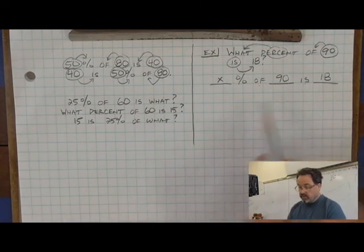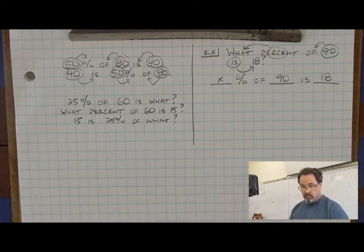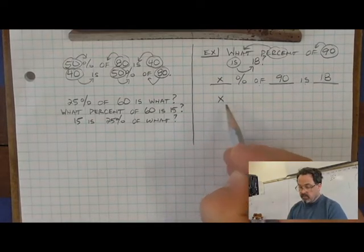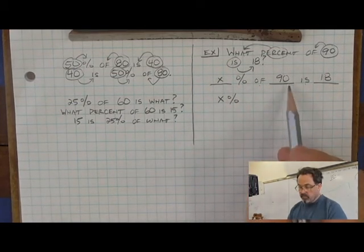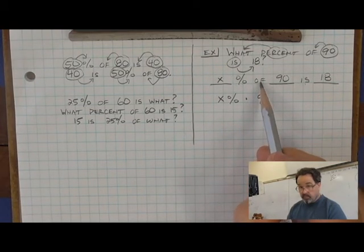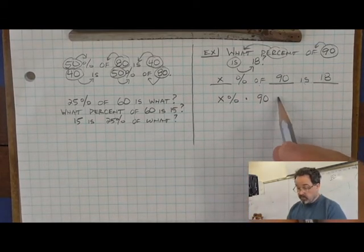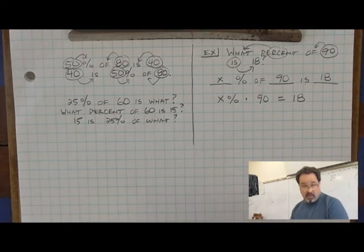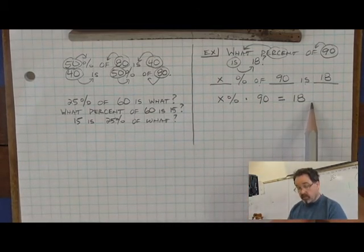Of and is are English words, but they have an equivalent math symbol to replace their meaning. Translating it to math, the x percent doesn't change. But when I take some percent of a number, I'm going to be multiplying. So the word of can be replaced with a dot for multiplication, and the word is can be replaced with an equal sign.